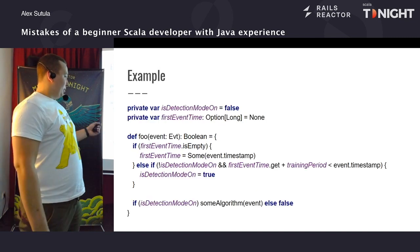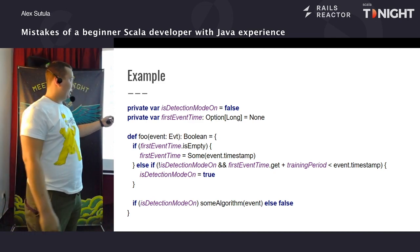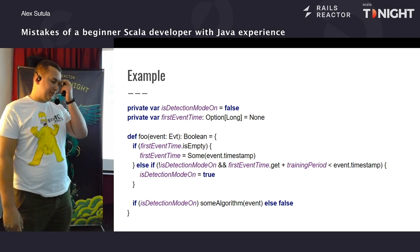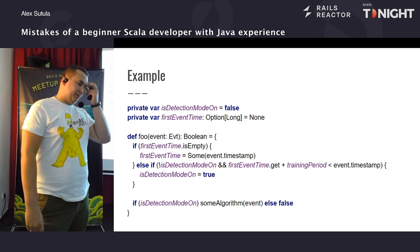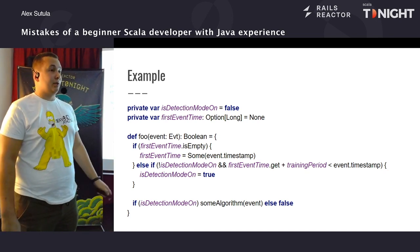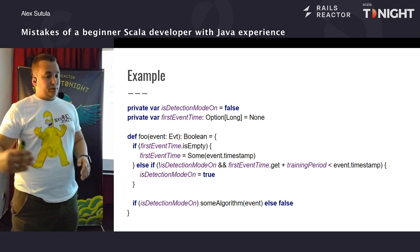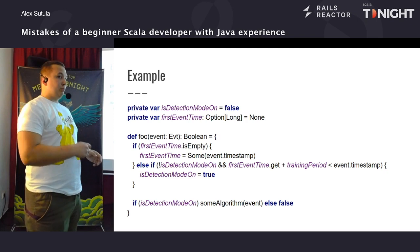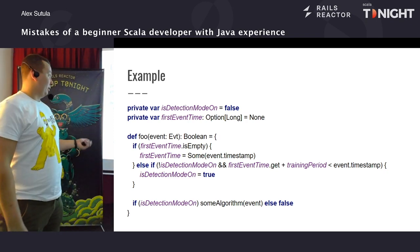Далі я б хотів розглянути приклад, як у нас є якийсь страшний legacy код, написаний раніше непоганим Java-програмістом, але Scala він тільки вчив. І ми за рахунок цих поступових кроків, застосування принципів, можемо відрефакторити цю функцію і подивитися, що буде в кінці.